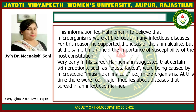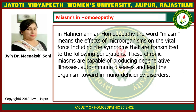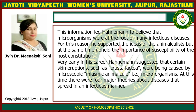For this reason, he supported the idea of animalistic causes, but at the same time emphasized the importance of susceptibility and the host constitution. Very early in his career, Hahnemann suggested that certain skin eruptions such as the crustal axia were being caused by a microscopic miasmic animatory microorganism. At this time, there were four major theories about how disease spread in an infectious manner.